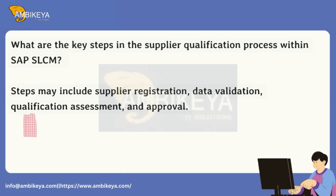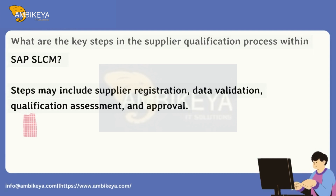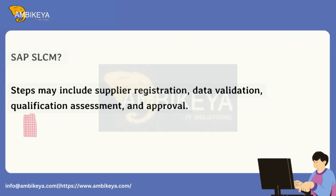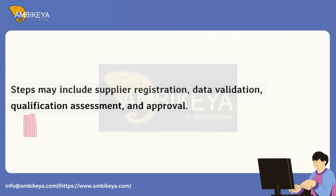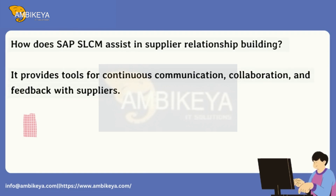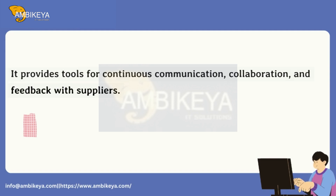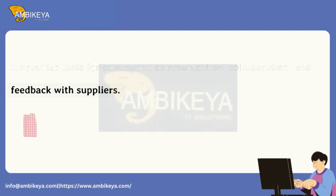What are the key steps in the supplier qualification process within SAP SLCM? Steps may include supplier registration, data validation, qualification assessment, and approval. How does SAP SLCM assist in supplier relationship building? It provides tools for continuous communication, collaboration, and feedback with suppliers.